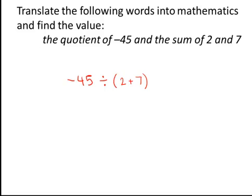Now to simplify, we start with the parentheses. Two plus seven is nine. Negative forty-five divided by nine.